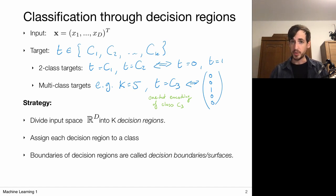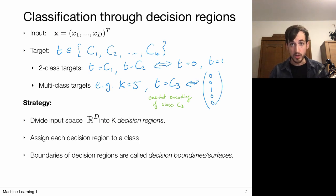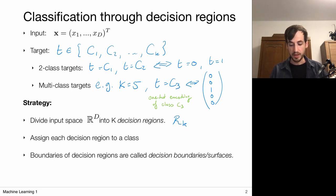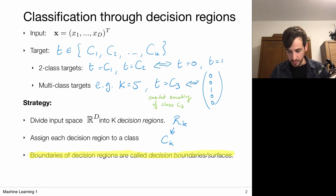Our strategy for building a classifier is as follows. We have data points which we assume to be d-dimensional, so each point lies somewhere in this d-dimensional space. We're going to split this space into k decision regions, labeled rk. If x lies within a region, we say it belongs to class k. The boundaries between those regions will be called decision boundaries or decision surfaces in the higher-dimensional case.